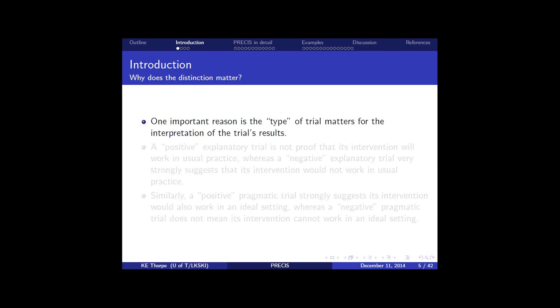Now, why does the distinction in the type of trial matter? One important reason is it matters for the interpretation of a trial's results. And here are two examples of how that takes place. A positive explanatory trial, so that's one where you conclude a difference between your treatment groups, for example, it's not proof that its intervention will work in usual practice. Whereas a negative explanatory trial very strongly suggests that it wouldn't work in usual practice.